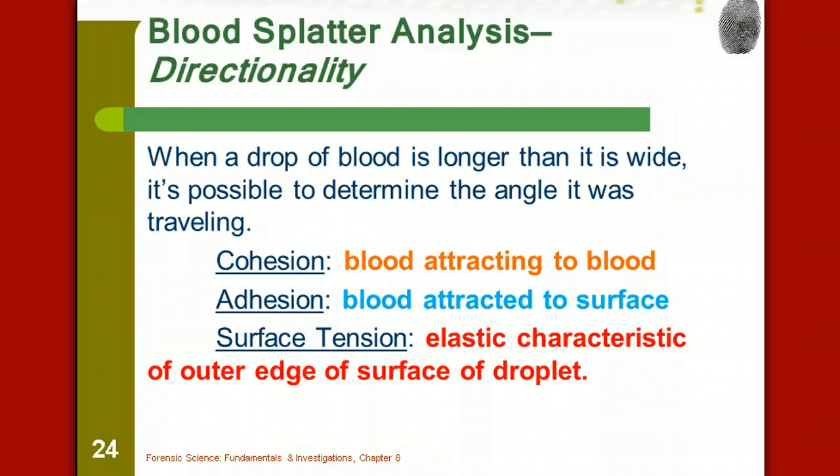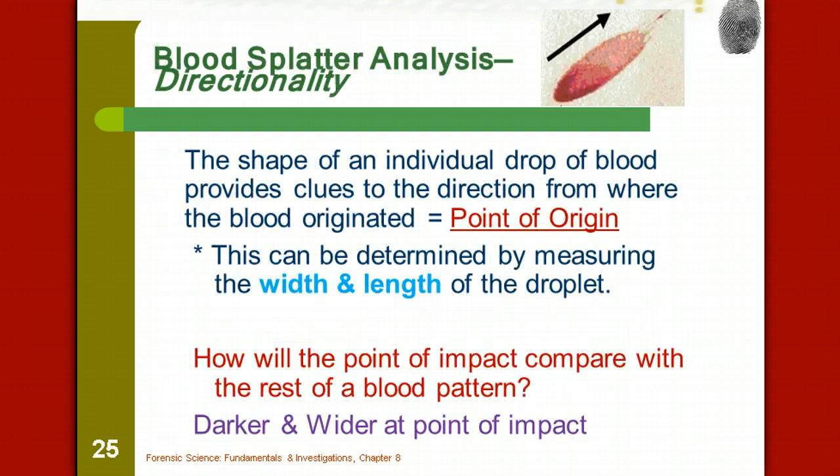When we look at the directionality of the blood, when a blood drop is no longer as wide as it is long, it's possible to determine the angle that it was traveling. We have cohesion - that's blood attracted to blood. There's adhesion - that's when blood is attracted to another surface. And then there's the surface tension of the droplet. This is an elastic characteristic of the outer edge of the surface of the droplet.